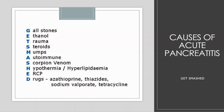H is for hypothermia or hyperlipidemia. E is for ERCP, which is performed primarily to correct a problem in bile ducts or pancreatitis. D is for drugs.